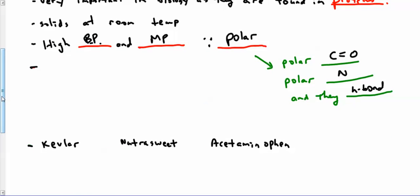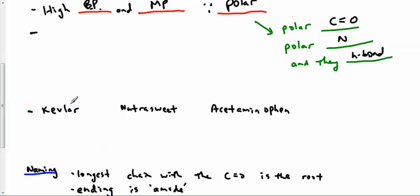There's a couple of famous ones. Kevlar is used in bulletproof vests. That's made of, it's basically classified as an amide. NutraSweet, which is a sweetener. Acetaminophen, which is a painkiller. You might know it as Tylenol.